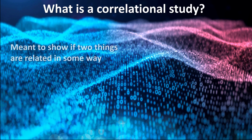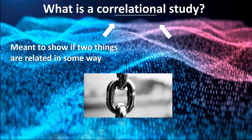Correlational studies are meant to show if two variables are related in some way. In fact, it's actually in the name — co-relational. A variable is basically just some thing. Two things can be related to one another, but the strength of that relationship can vary a lot.